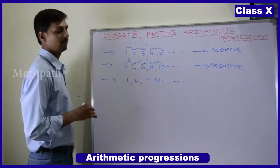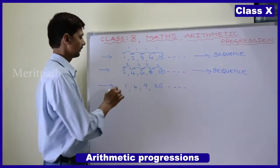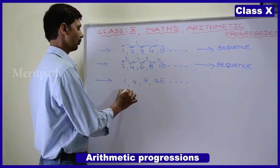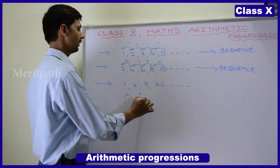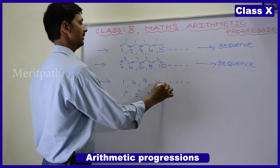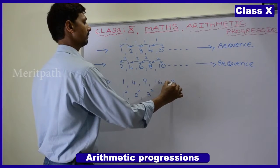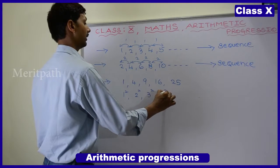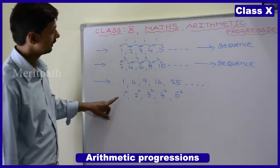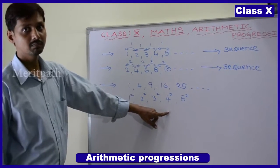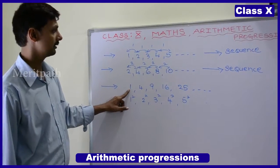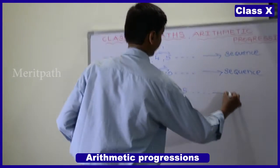Third pattern: 1 square, 2 square, 3 square, 16 and 25 — that is 4 square and 5 square, and so on. We can observe these are the squares of natural numbers. So this pattern is also following some rule, and it is also called a sequence.